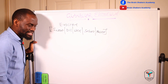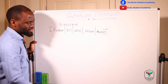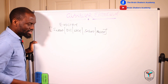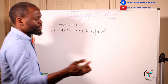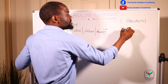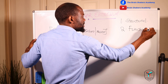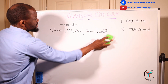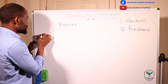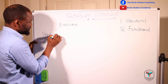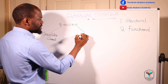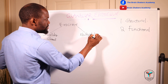Exocrine glands can take the form of unicellular glands or multicellular glands. The classification of exocrine glands can be broken down into two: number one is the structural classification, and number two is the functional classification. For structural classification, if the exocrine gland has only one cell it is a unicellular gland, and if it has more than one cell it is referred to as a multicellular gland.